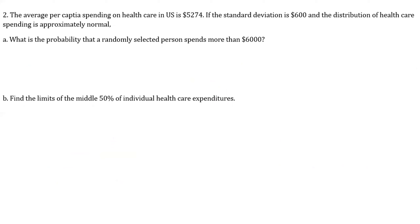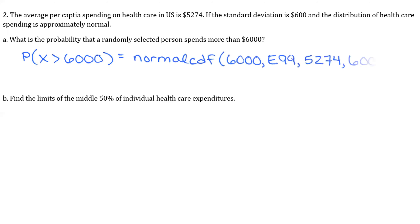Practice problem 2a: the average per capita spending on health care in the U.S. is $5,274 with a standard deviation of $600, approximately normally distributed. Find the probability that a randomly selected person spends more than $6,000. Since we want a probability, we use normal CDF with lower bound 6,000, upper bound E99, mean 5,274, and sigma 600. The probability is about 11.31 percent, or 0.1131.